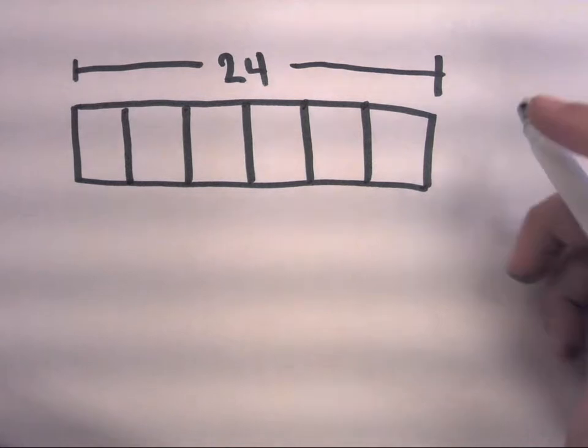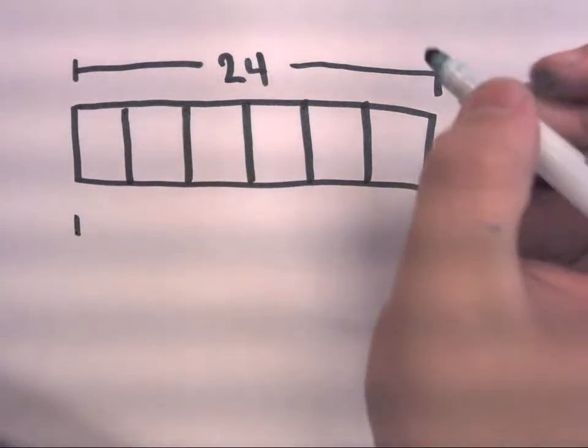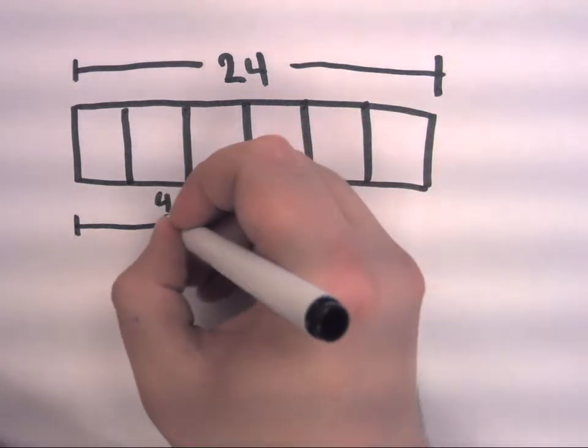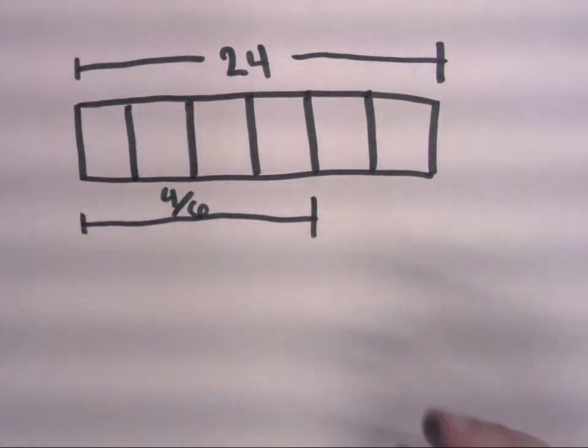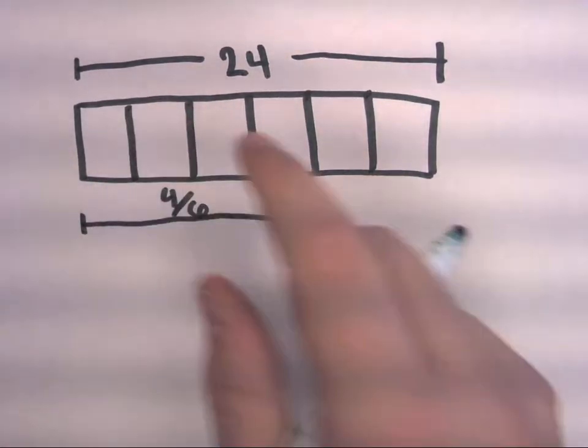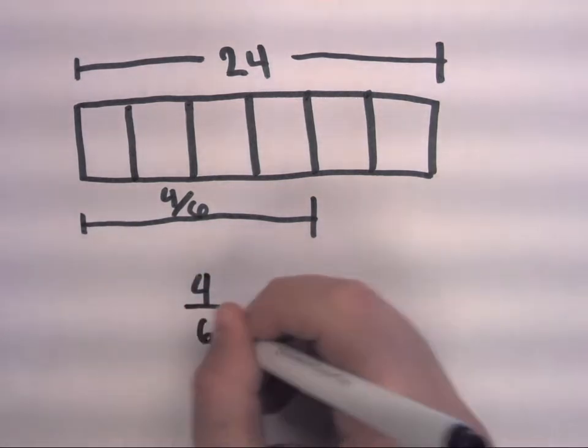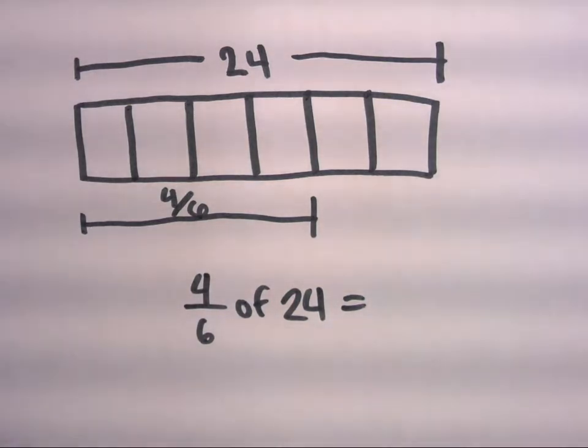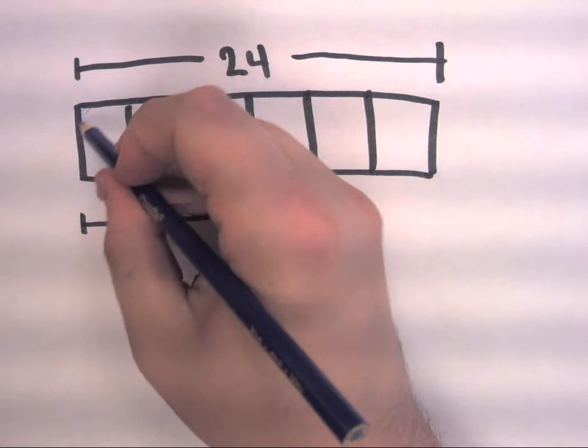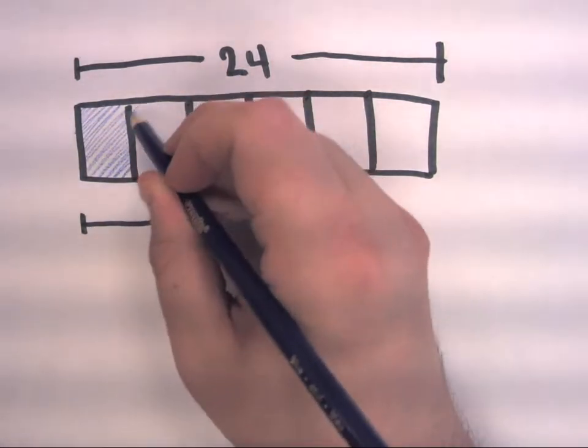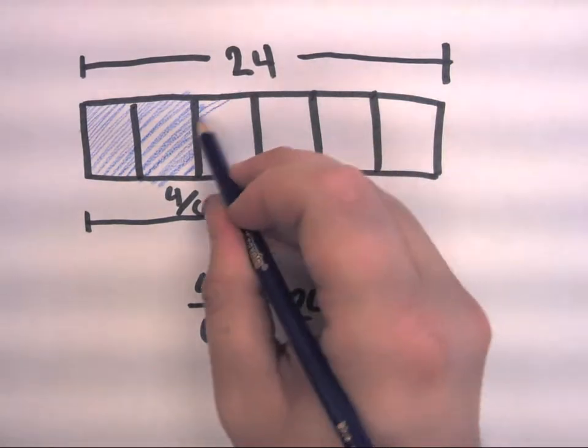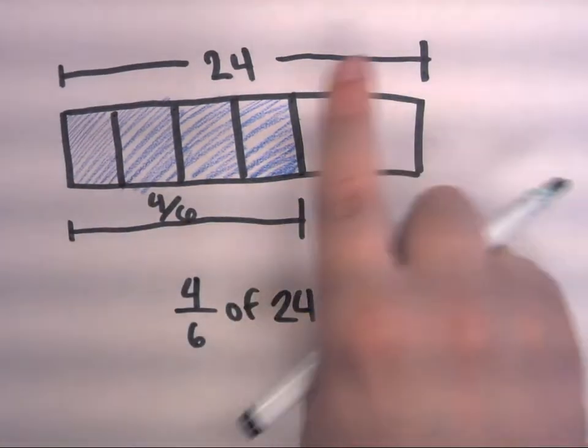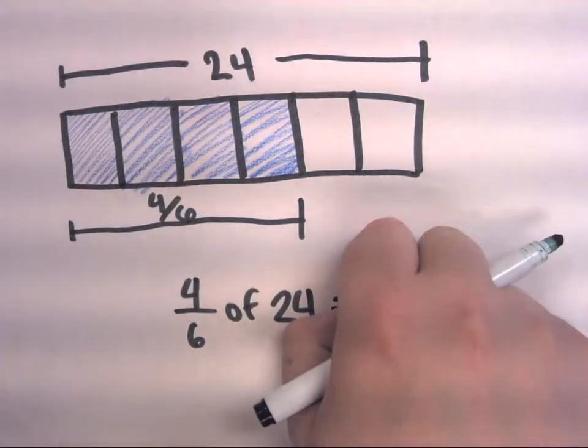And I want to know what would 4/6 of 24 be? So what would the value of this distance here be? 4/6 of 24 equals what? And again, I'm going to shade these areas in here. All right, so this is the part of the diagram or the tape diagram I'm interested in.